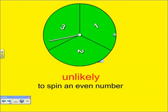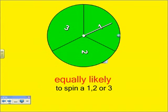It is unlikely on this spinner that we will spin an even number. We have one even number, and that is two, out of three numbers. So our chances of spinning an even number are one out of three, which makes it unlikely that we will spin an even number.